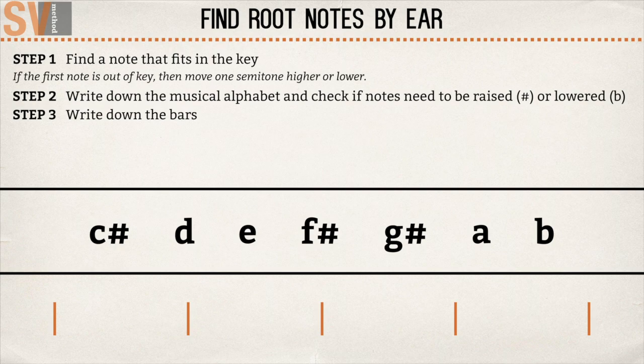When it appears to be a lot of bars, it could be handy to break the progression down into different pieces. Then you can for instance first take a look at the first 4 bars, then the second 4 bars, and so on.